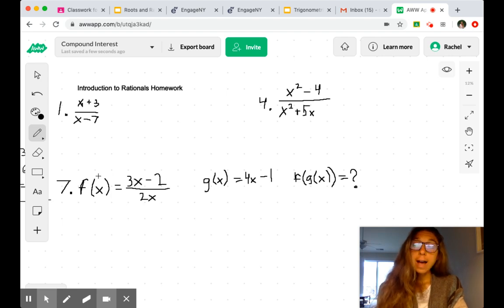So problem 1 asks what value is not going to be included in the domain, right? Or where are we going to get an answer undefined for this function? Well, we know that we have a problem if our denominator is zero.